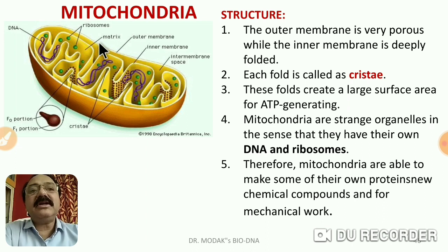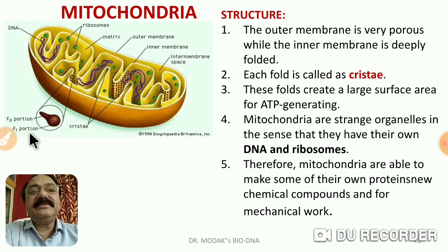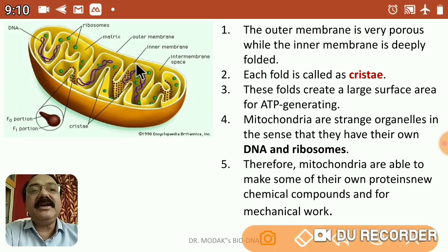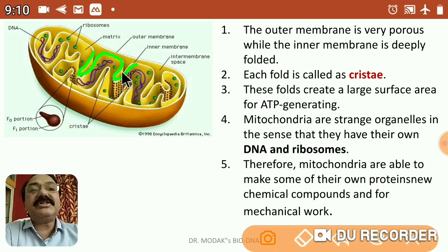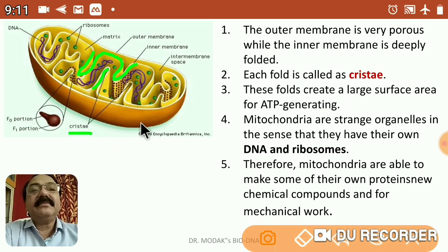Structurally, each mitochondrion consists of an outermost envelope which is two-layered. The outermost layer is a unit membrane — it is lipoproteinaceous, permeable, smooth, and continuous. The inner membrane is folded; it runs parallel but undergoes folding inside, and because of these folds the inner compartment is somewhat divided. This finger-like fold is called cristae. You can see a number of cristae are present.